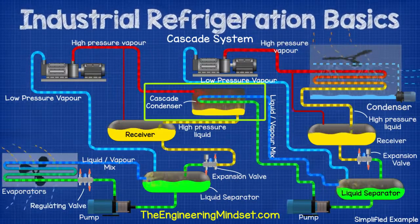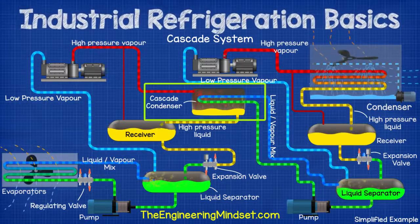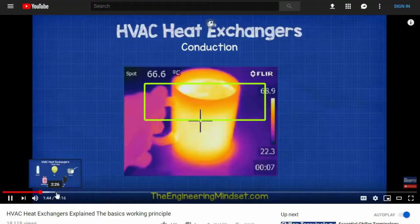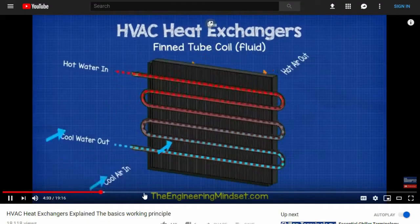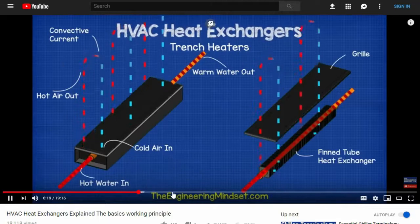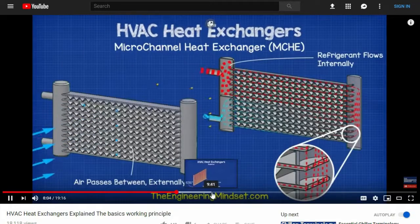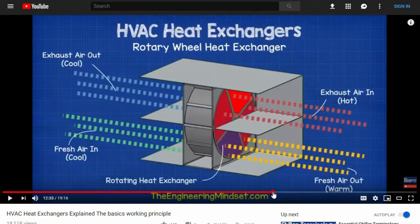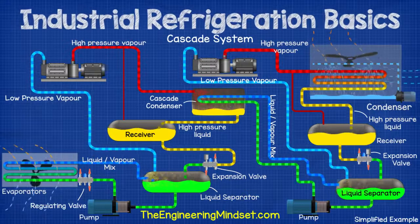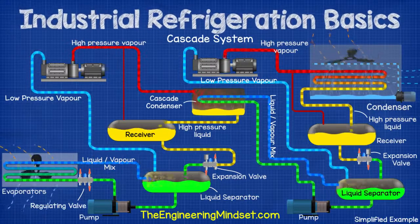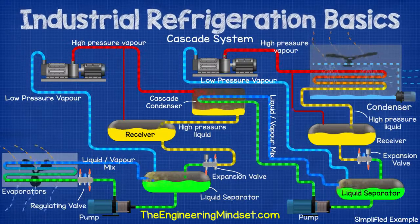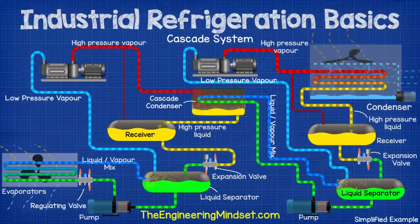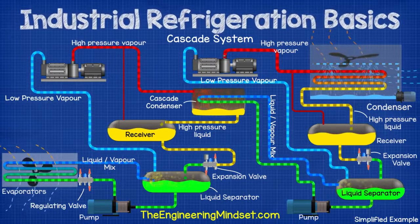Connecting the two circuits is a heat exchanger known as a cascade condenser. We've covered how heat exchangers work as well as the different types in our previous videos — do check that out, links are in the video description down below. The cascade condenser acts as a condenser for the high temperature circuit, but also an evaporator for the low temperature circuit.